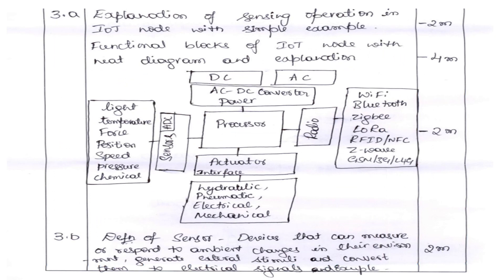For the sensing operations scheme: draw the block diagram with processors, number of sensors, actuators — the complete functional block of IoT nodes — which carries two marks. Describing all blocks in detail carries four marks, and explaining the sensing operation in the IoT node carries two more marks, totalling eight marks. For 3B, the definition of sensor carries two marks, and determining the characteristics necessary for the sensor carries the remaining marks.